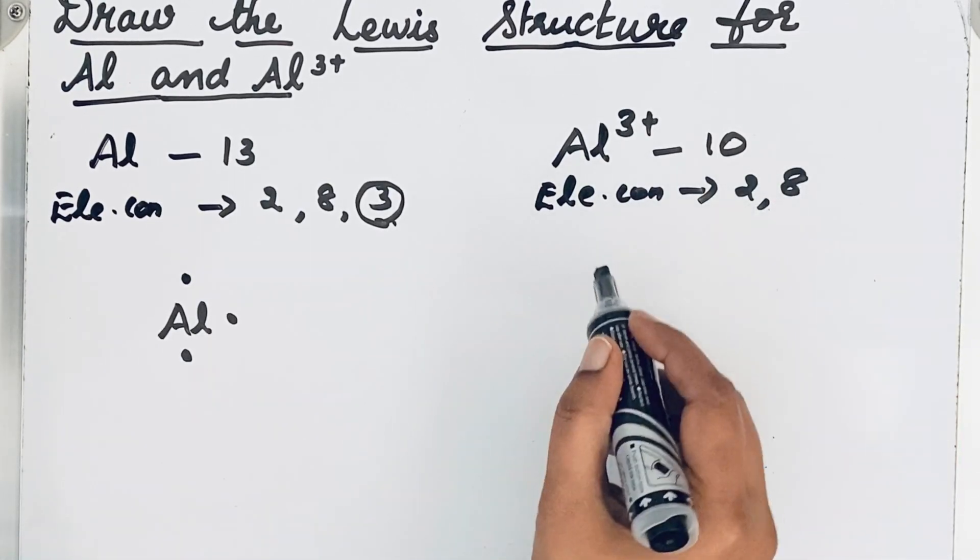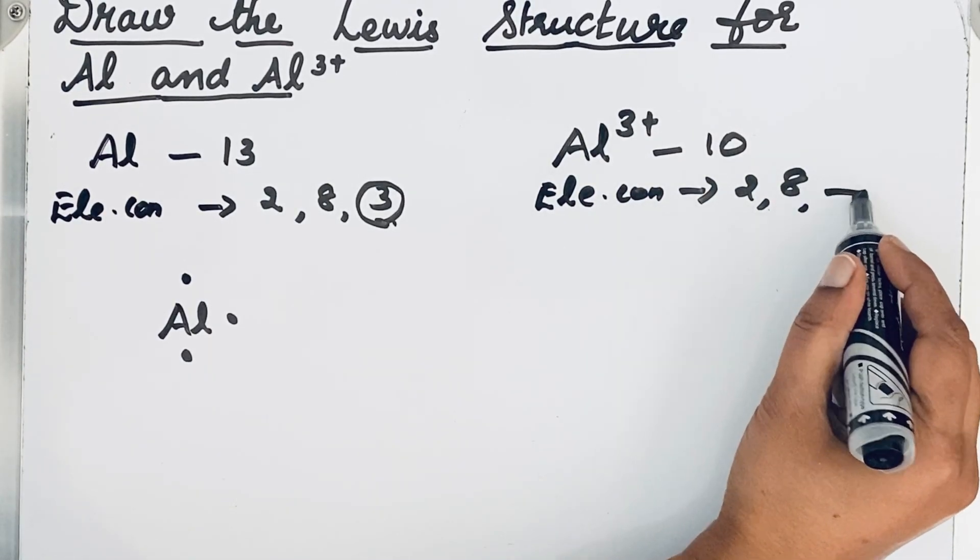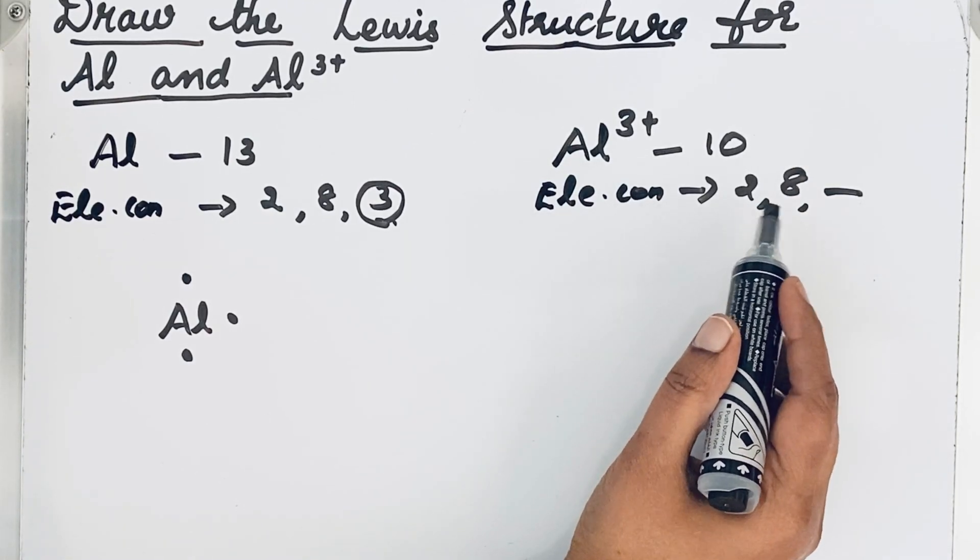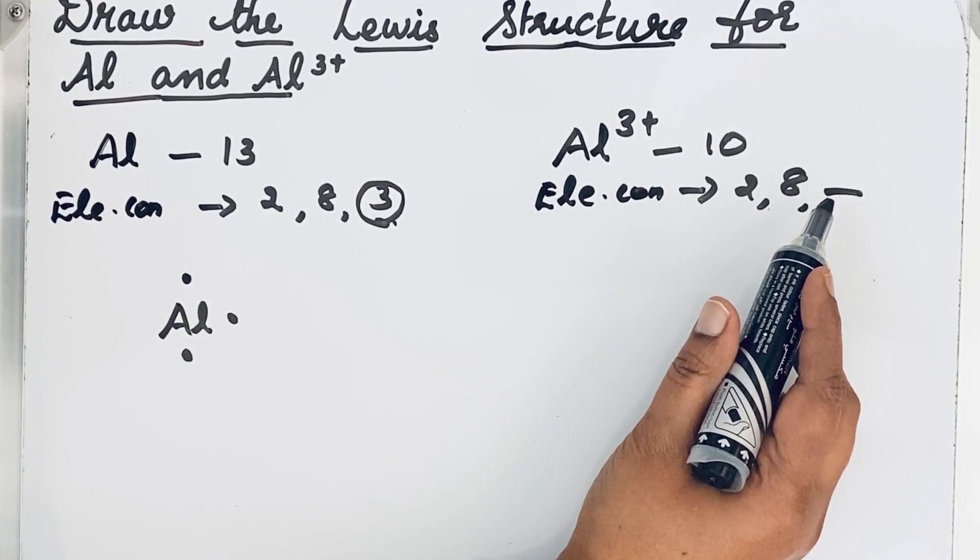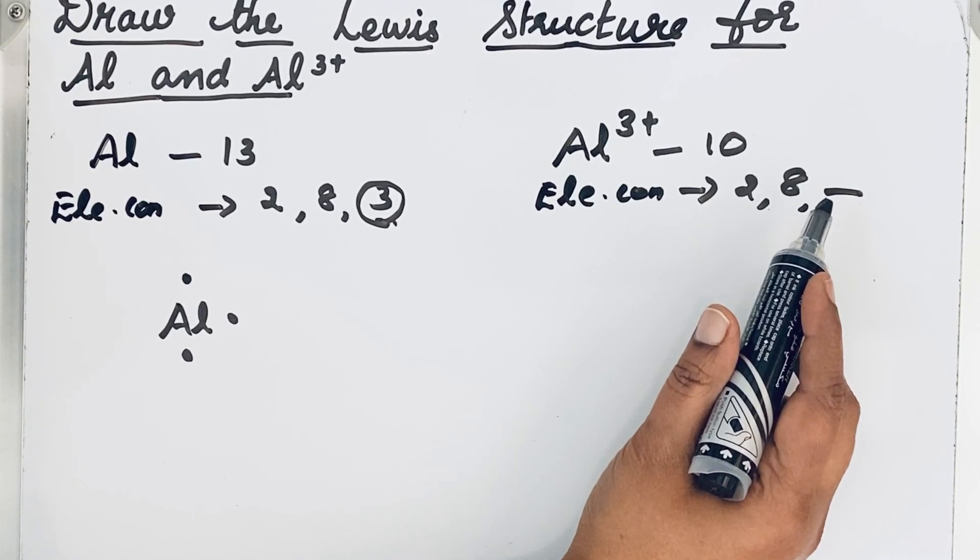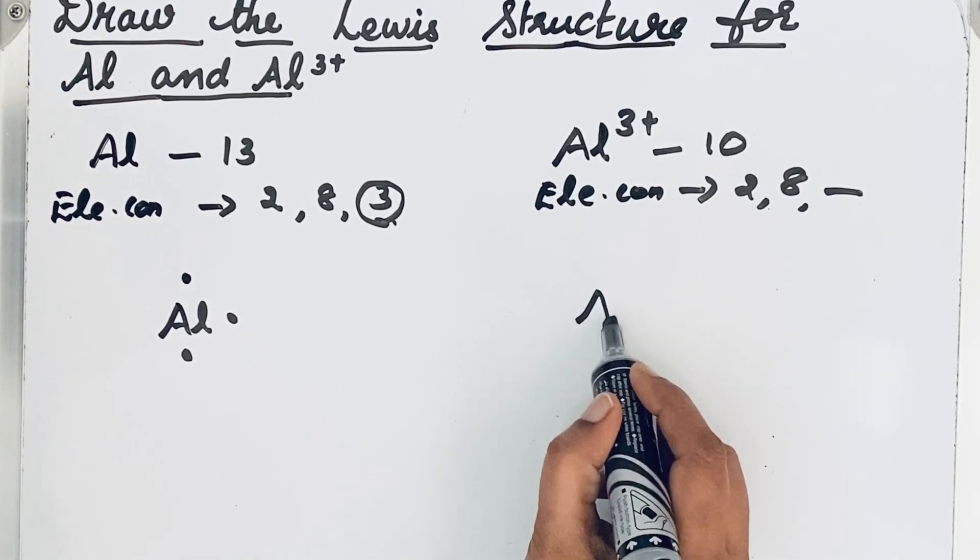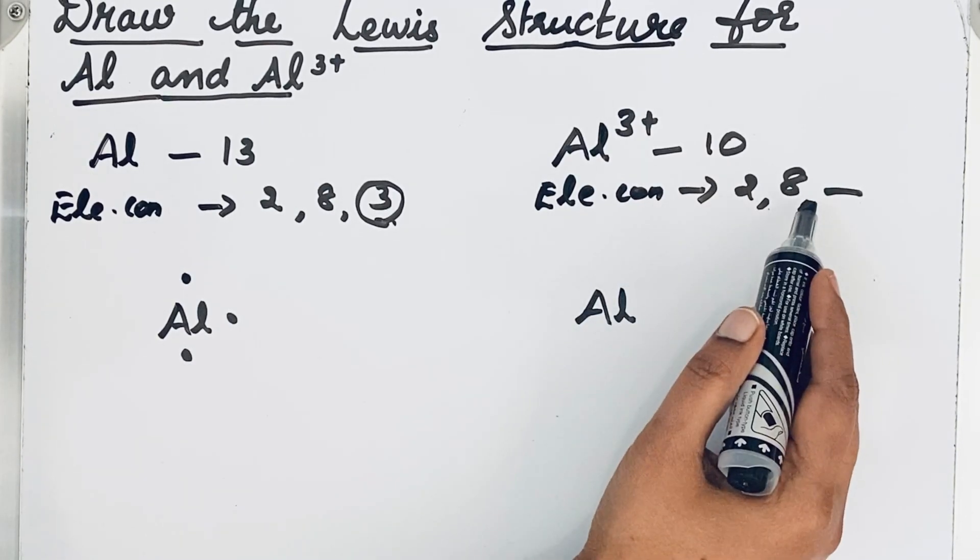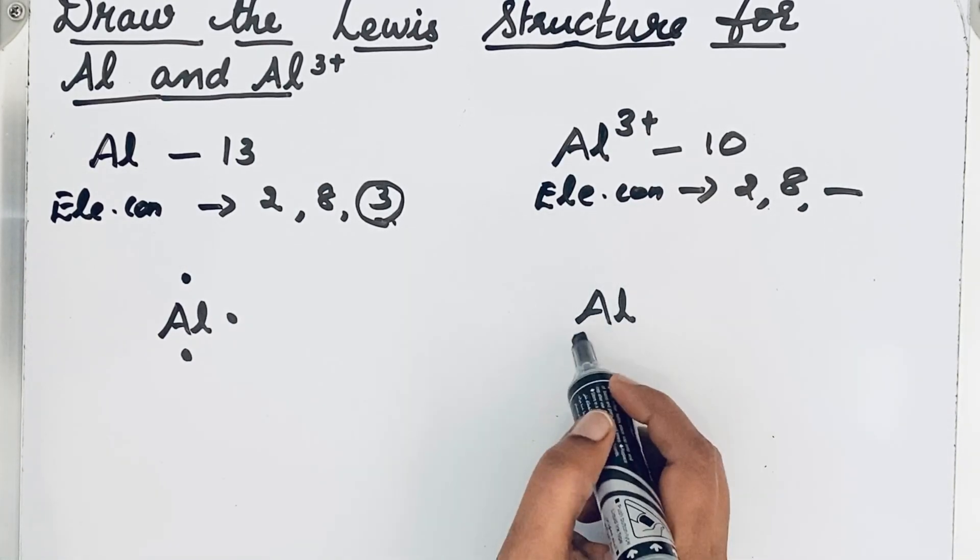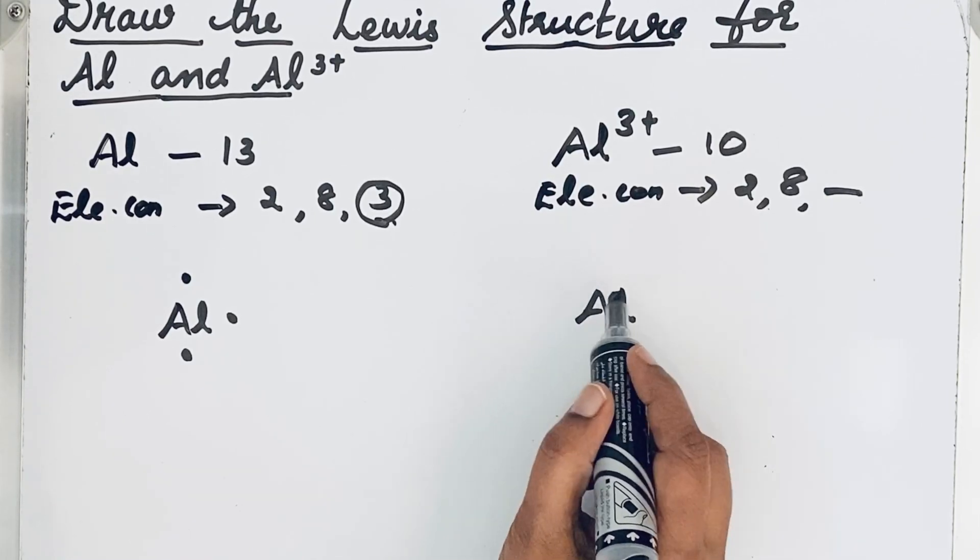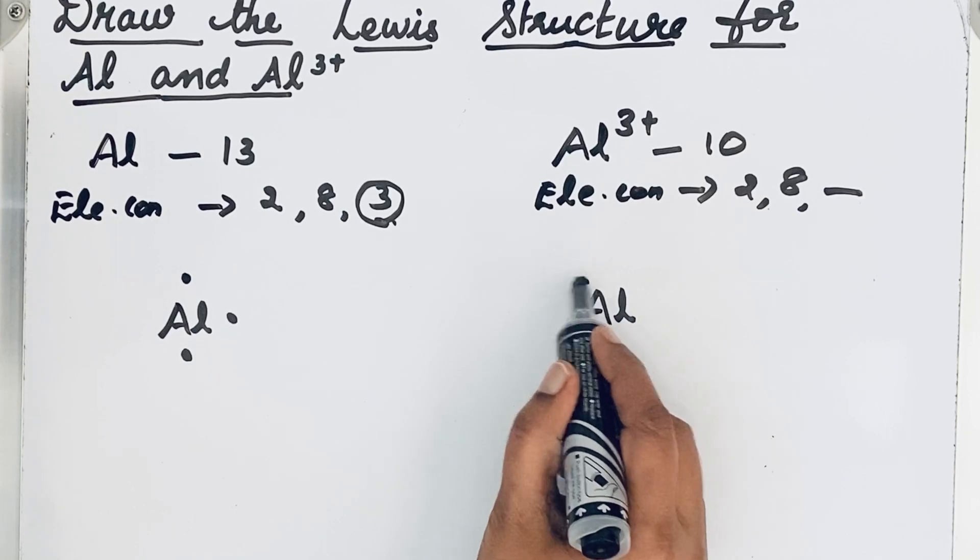2, 8. What about the third shell? The outer shell is vacant. In Al³⁺, the valence shell is empty, so we cannot show any dot. There are no electrons in the valence shell, so we are just writing the symbol.